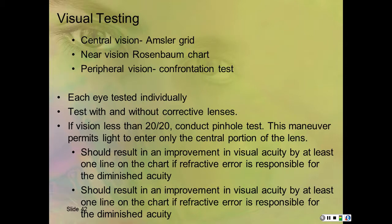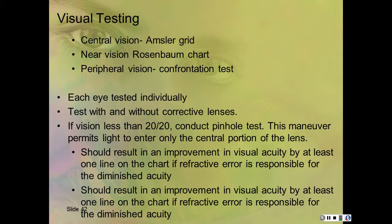If vision is less than 20/20, conduct a pinhole test—poke a small hole in a piece of paper with a pin or ink pen and have them look through it. They should be able to see at least one line better if a refractive error is responsible. On the Rosenbaum chart, there's a green line and a red line. They should be able to read below the green line; if they cannot, they need glasses. The red line is at the 20/20 point.